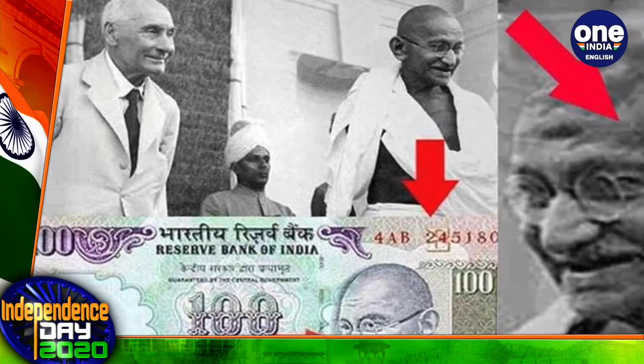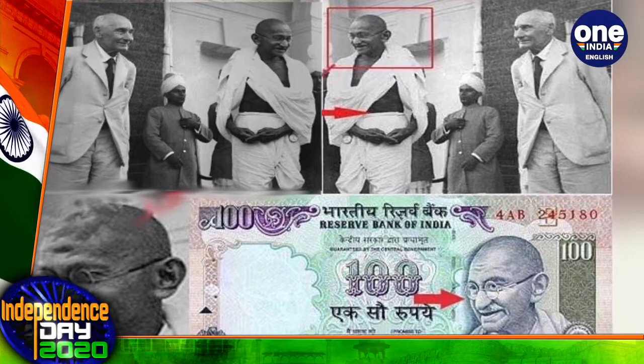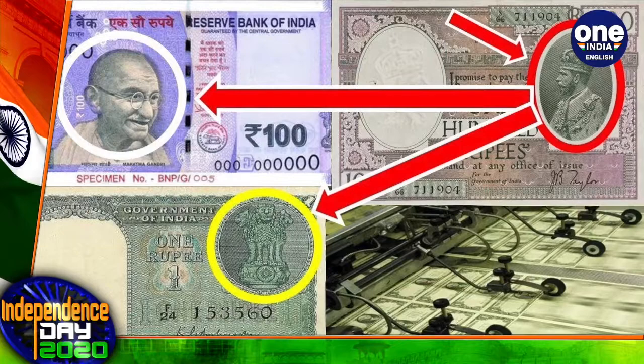Earlier, the picture of King George used to be inscribed on the notes. But the portrait of the Father of the Nation made its regular appearance on currency notes only in 1987, when the series of Rs 500 currency notes showing the smiling Gandhi was launched in October that year. Since then, Mahatma Gandhi's portrait has been regularly used on currency notes of different denominations.